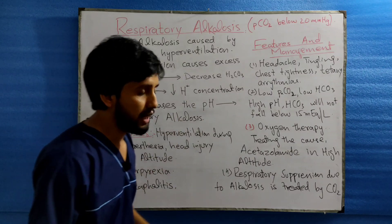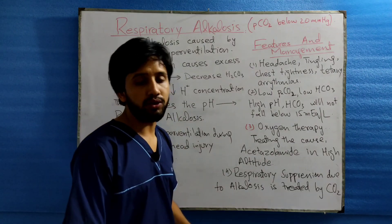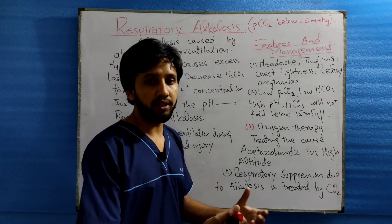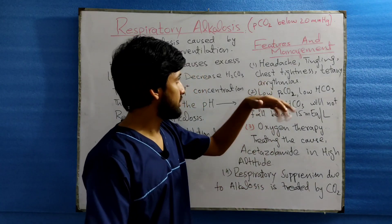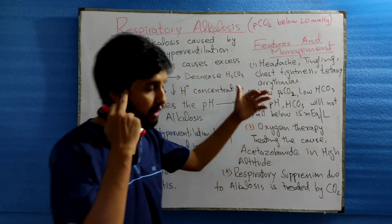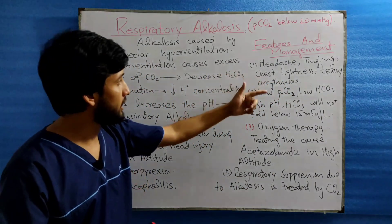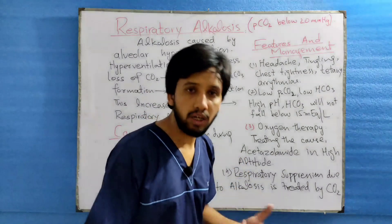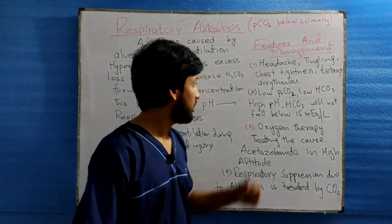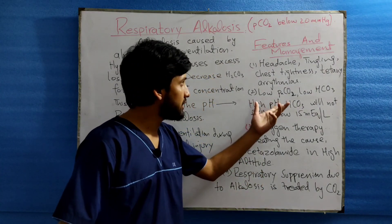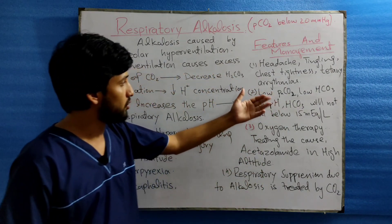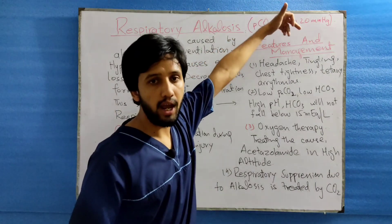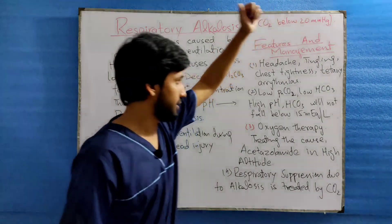Moving to the clinical features and management of respiratory alkalosis — a patient comes to you with the following clinical features: headache, tingling, chest tightness, tetany, arrhythmia (that is irregular heartbeat), and a low PCO2 level, which is below 20 mmHg as discussed earlier.